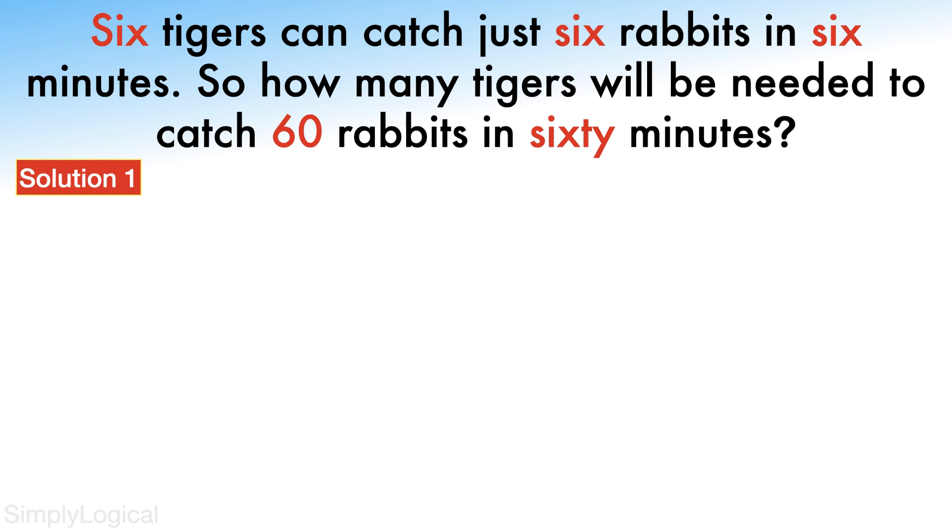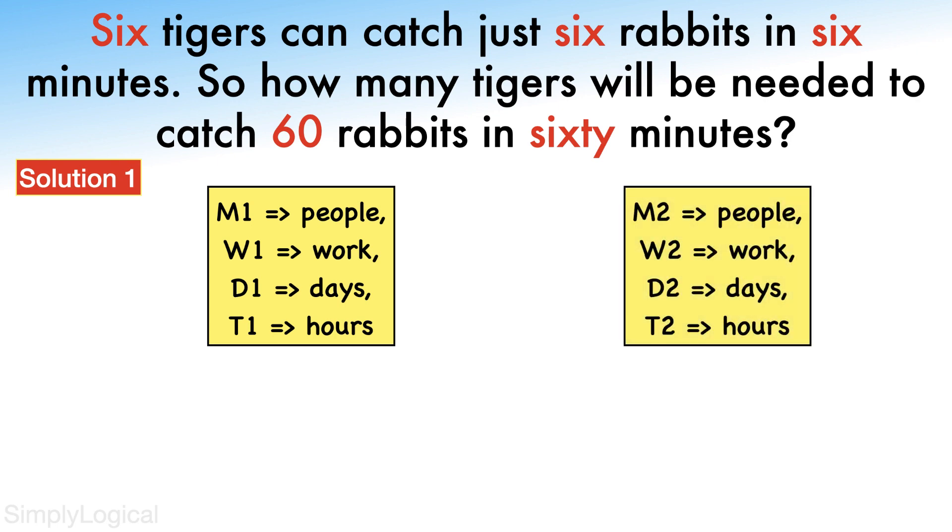Let me explain the formula approach first. If M1 number of people can do W1 work in D1 days working T1 hours each day, and M2 number of people can do W2 work in D2 days working T2 hours each day,